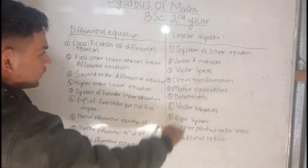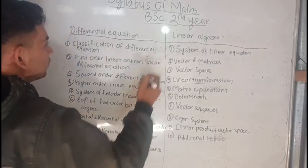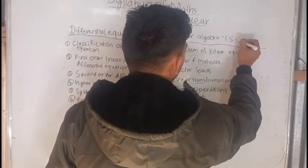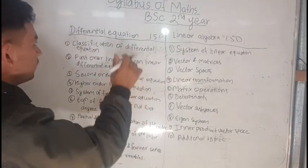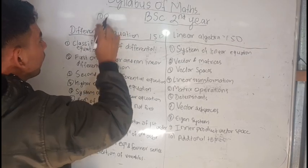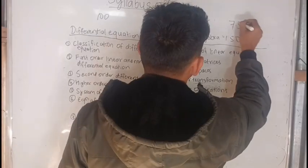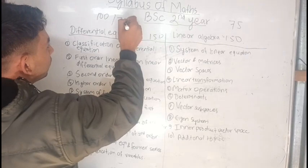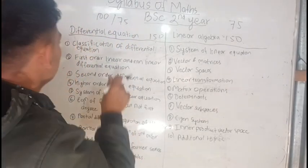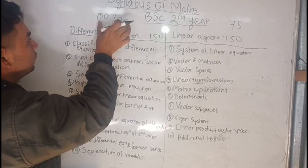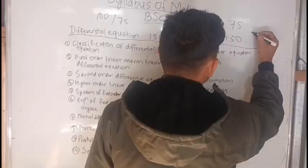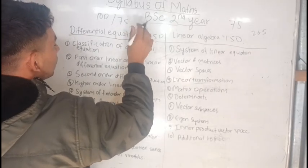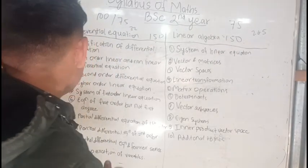We are going to look at the second chapter. The Differential Equation teaching hour is 150 hours. The differential equation is 75 marks and the linear algebra is 75 marks as well. The pass mark is 32 points. Differential Equation is equal to 10 chapters.